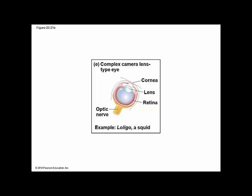The squid eye is like the vertebrate eye, but evolved entirely independently. The squid Loligo has a complex eye with features — cornea, lens, and retina — similar to those of vertebrate eyes. However, the squid eye evolved independently from vertebrate eyes.